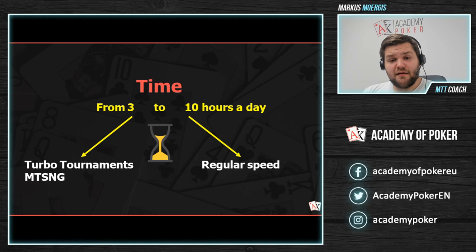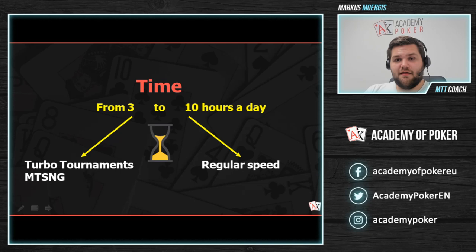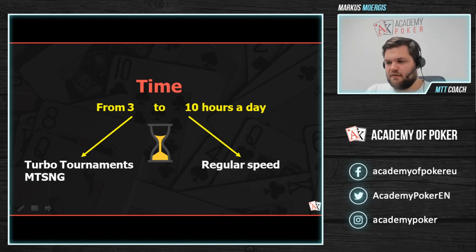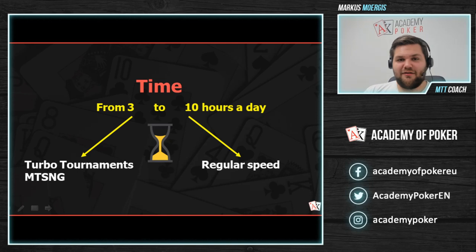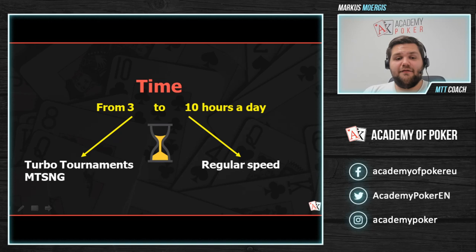If you're going as a poker pro trying to make money, you can go for normal speed tournaments. They take longer — between six and up to ten or eleven hours. If you start at 10 a.m. you have the time. But if you play in the evening and suddenly make the final table, it could be 4 a.m. and the next workday will be really hard, so choose your tournaments wisely.